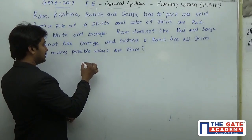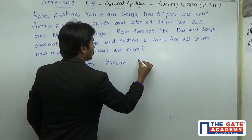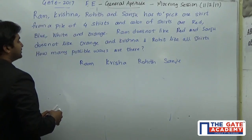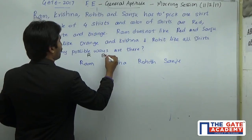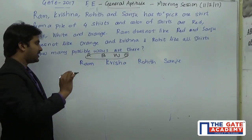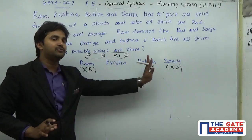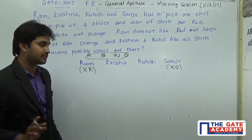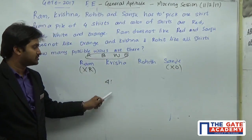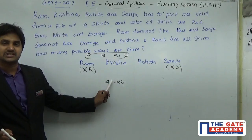We have four people — Ram, Krishna, Rohit, and Sanju — and the shirts available are red, blue, white, and orange. The condition given is that Ram does not like red and Sanju does not like orange. If we forget about the conditions, the total number of possibilities is 4 factorial, which equals 24.